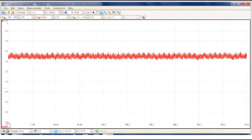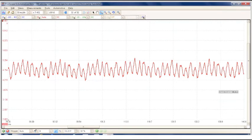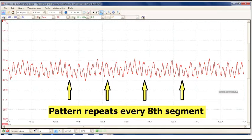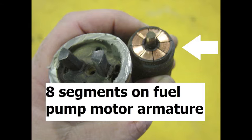Let's take a closer look at the fuel pump current pattern. Here's what the typical one looks like when we zoom in for a closer look. Notice how the pattern repeats itself after every eighth peak. What you're seeing in the pattern is the amount of current passing through each individual segment. See how this dissected fuel pump shows eight segments on the fuel pump motor's armature? Some pumps may have 10 or even 12 segments. So look for that repetition in the pattern.